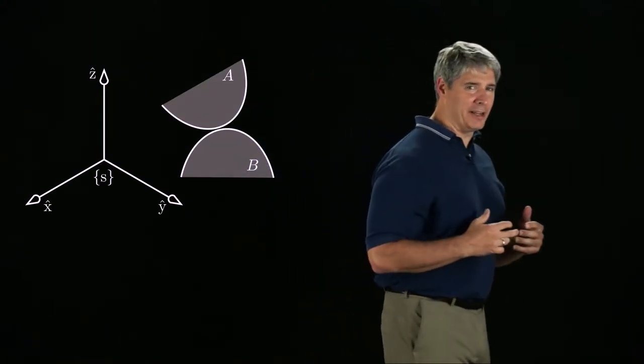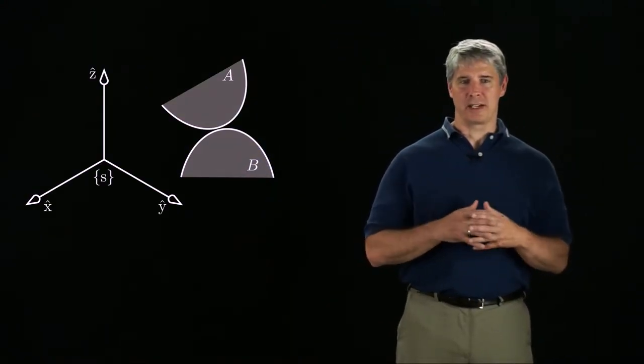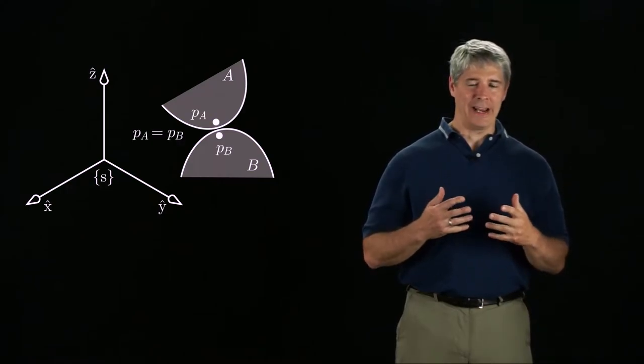If two bodies are in contact, then the contact constrains the possible twists of the bodies. For example, let's say that bodies A and B are in point contact, and that point can be expressed in a space frame as PA or PB.